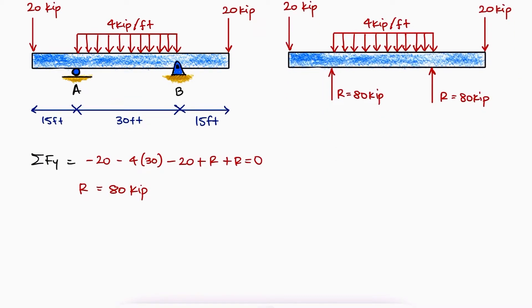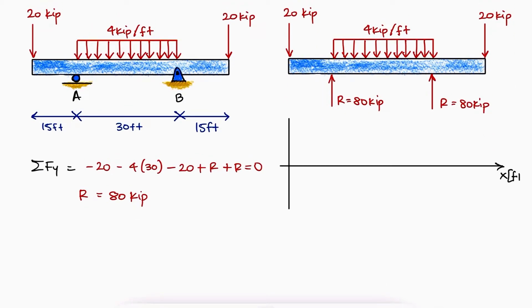The shear diagram will have an x-axis in feet and a y-axis in kips, and the shear will go down by 20 on the left, go up by 80 at A, have a slope of minus 4 for 30 feet, meaning it goes down by 120 up to B, go up by 80 again at B, and maintain that value till the end of the beam when it goes down by 20 again.